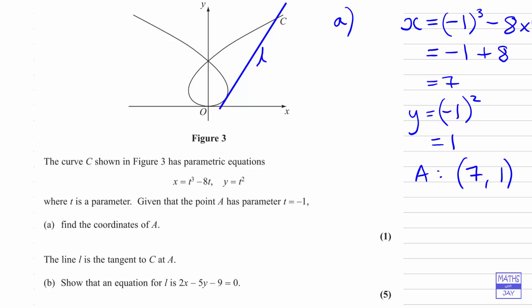The line l is the tangent to c at A, so point A is somewhere there. It doesn't really matter exactly where, but it helps to have a visualization. The line is touching the curve, it's a tangent, so it's just touching at one point.